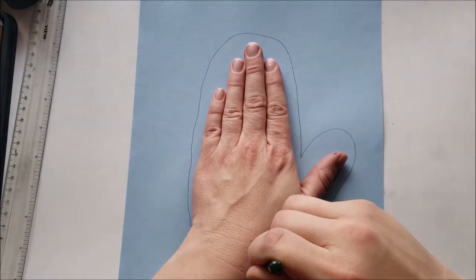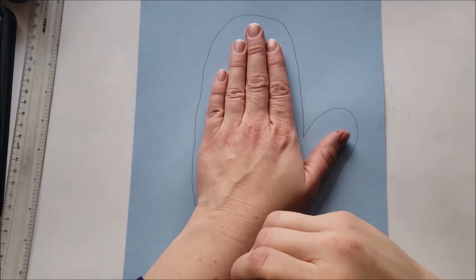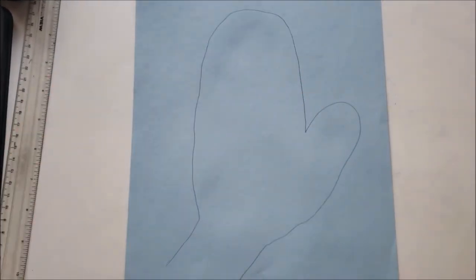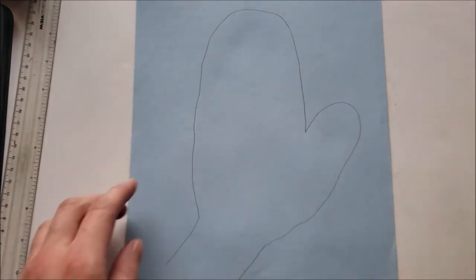And then, when I get back to my wrist, that's when I'm going to get skinny again. Okay? So, that's how I kind of did my trace. And when you do that, it kind of creates this really fun sort of mitten shape.